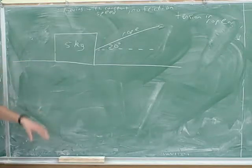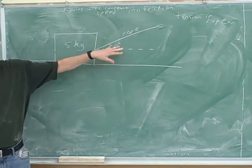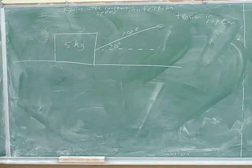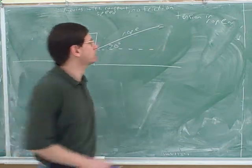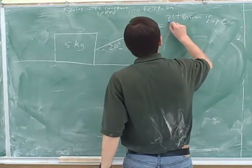Here we have an object that's resting on the ground, and somebody's pulling it on a rope that's at an angle of 20 degrees with the horizontal. It's moving with constant speed and no friction. And the question is, find the tension in the rope.